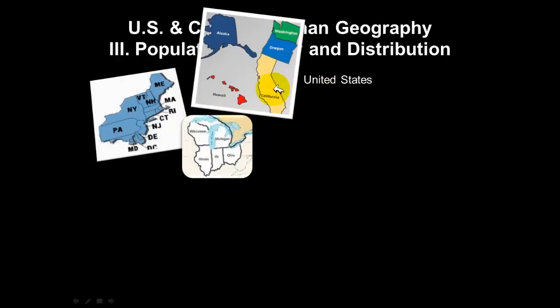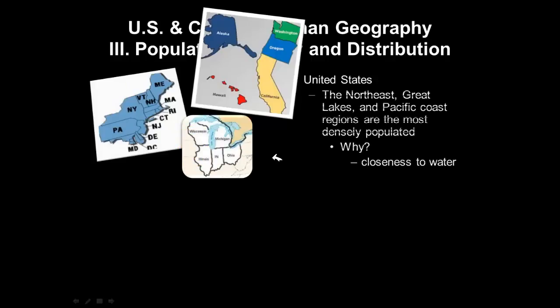These pictures represent where the majority of the population lives in the United States. So the Northeast, the Great Lakes, and Pacific Coast regions are the most densely populated.